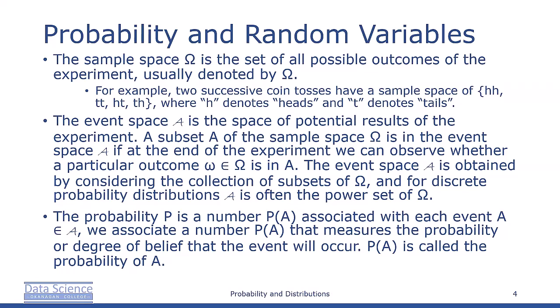The probability space models a real-world process, referred to as an experiment, with a random outcome. Sample space omega is the set of all possible outcomes of the experiment. For example, two successive coin tosses have a sample space heads-heads, tail-tail, head-tail, tail-head.